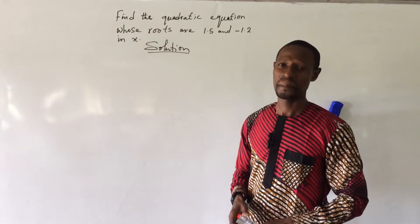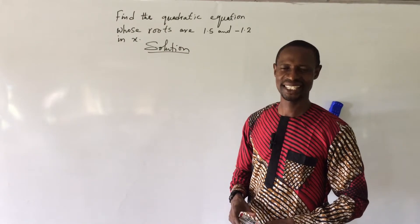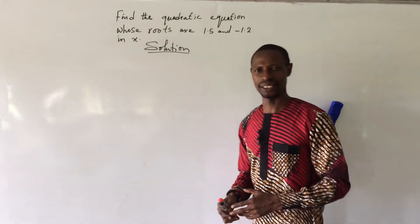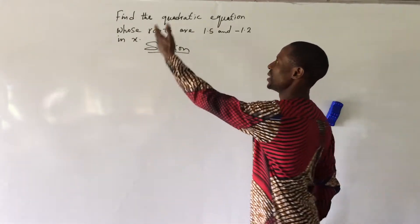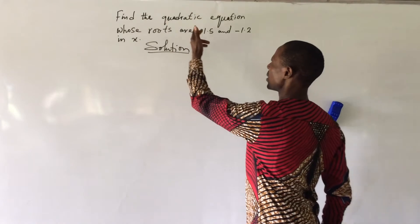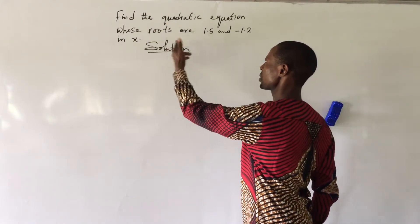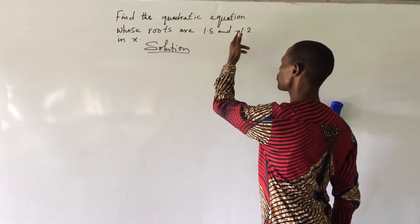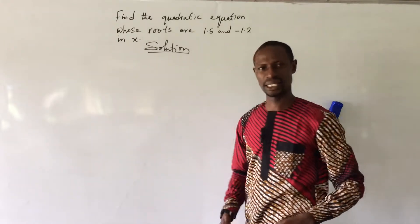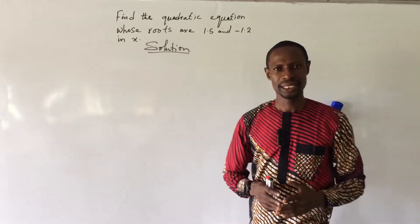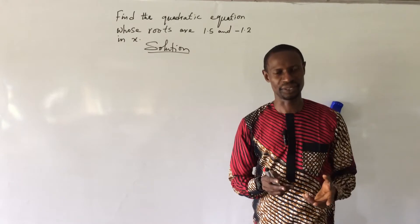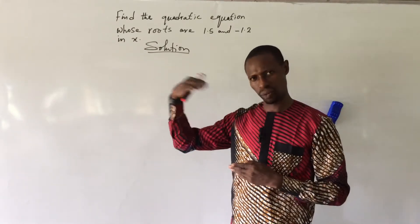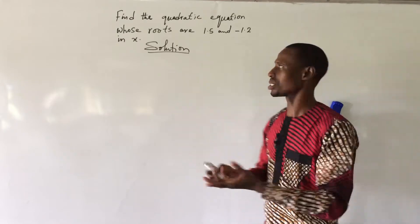Welcome to Online Man's TV. My name is Jake's Animal and here we are again. We have a little challenge on the board: find the quadratic equation whose roots are 1.5 and minus 1.2 in x. The solutions are given to the quadratic equation, so we are expected to work backward to get the question that led to these two solutions.